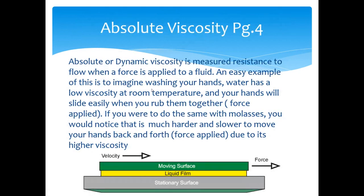Absolute or dynamic viscosity is the measured resistance to flow when force is applied to a fluid. An easy example is washing your hands: water has low viscosity at room temperature and we can easily rub our hands together under the tap — that's the force we're applying. With something thicker like molasses, it would be much harder and slower moving hands back and forth. The velocity we can achieve and the force required is a reflection of viscosity and the friction between the two moving surfaces.